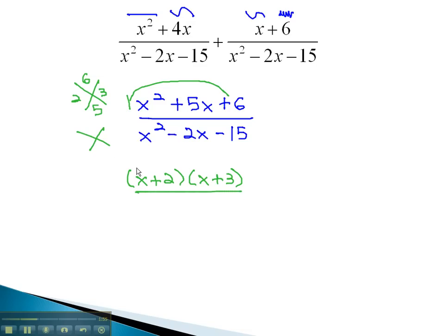Over in the denominator, we use the same pattern, the AC method, multiplying to negative 15 and adding to negative 2 would be 5 and 3, where the 5 is negative. This gives us x minus 5 times x plus 3.